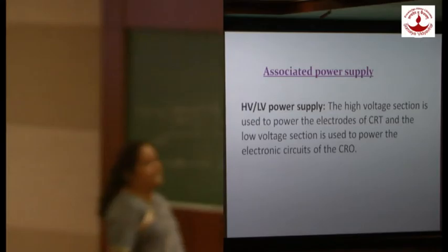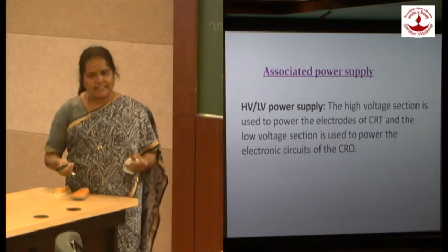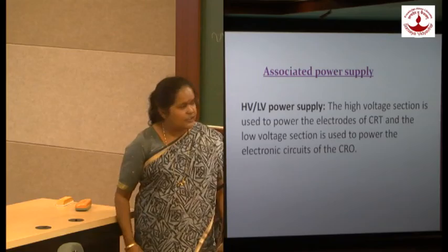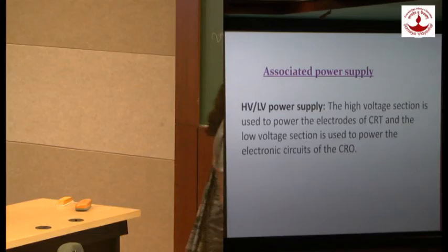The seventh system is the power supply, which is of two types: high voltage and low voltage. The high voltage — around 1,500 to 2,000 volts — is applied to the CRT to accelerate the electron beam to very high velocity. The low voltage is for all the associated circuits required for the functioning of the CRO. This is how the CRO works, giving a visual display of the waveform under test.